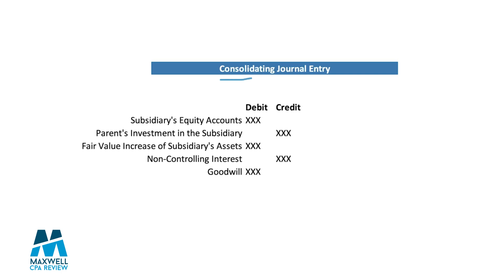Now let's talk about the consolidating journal entry — you'll want to memorize this backwards and forwards. First, we have to get rid of the subsidiary's equity account, so we debit out the equity accounts. Then we have to get rid of the parent's investment in the subsidiary by crediting their investment. If we have a fair value increase of the subsidiary's assets, we debit that amount. If we don't own 100% of the subsidiary, we'll have a non-controlling interest, which is a credit. And then our final entry is a goodwill debit, or a bargain purchase credit if applicable. In any consolidation, you'll always have these first two entries, and depending on the situation, you may have the additional entries.